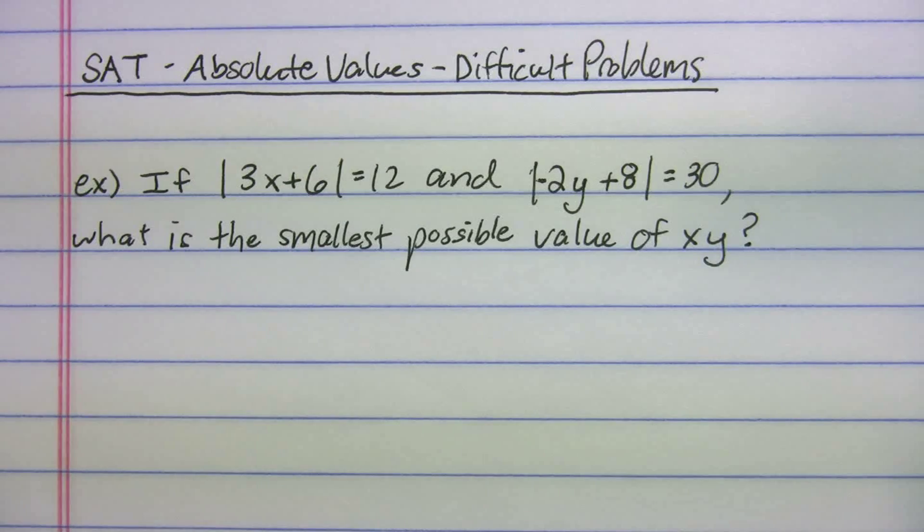Alright, let's take a look at two of the more difficult absolute value problems. The first one says, if the absolute value of 3x plus 6 equals 12, and the absolute value of negative 2y plus 8 equals 30, what is the smallest possible value of xy? You can pause the video and attempt this on your own right now.